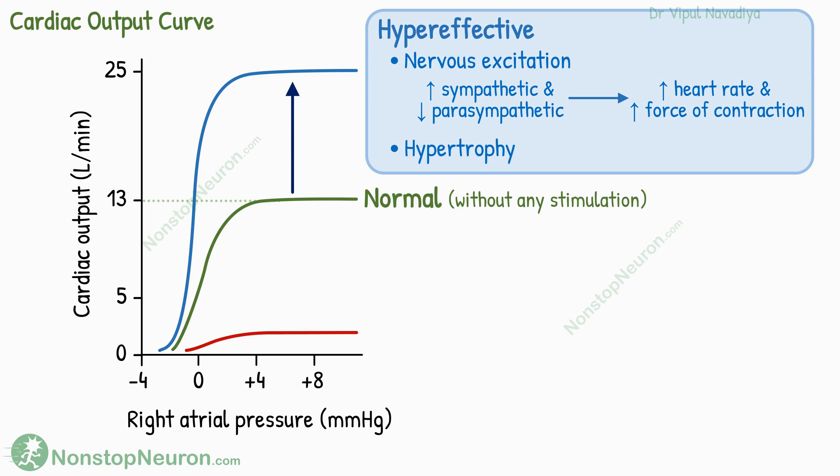The next factor raising this curve is hypertrophy of the heart. When there is a long-term increase in the workload on the heart, its muscle mass and contractile strength increases. Such factors can increase the plateau level up to 25 liters per minute independently. And when combined, they can increase the maximum output up to 40 liters per minute. These were the factors that make the heart hyper-effective.